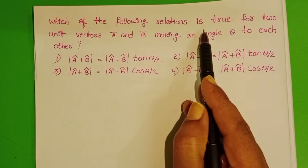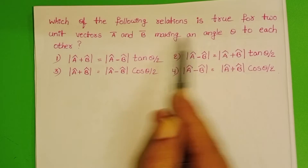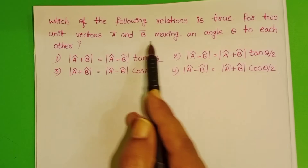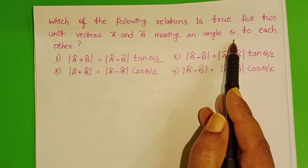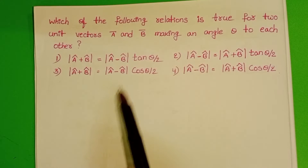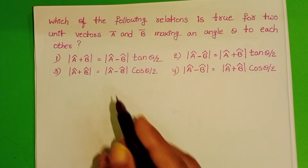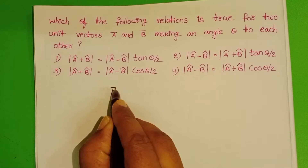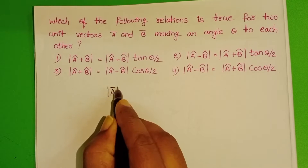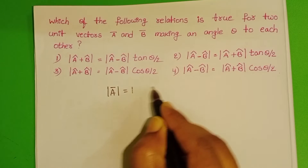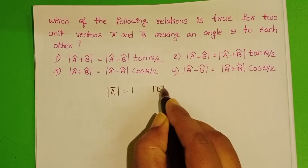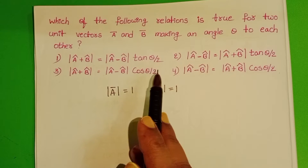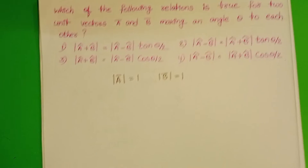Which of the following relation is true for two unit vectors, a bar and b bar, making an angle theta to each other? The given two vectors, a bar and b bar, are unit vectors. We know the magnitude of a unit vector is equal to 1. We have to check which of the following relations is correct.